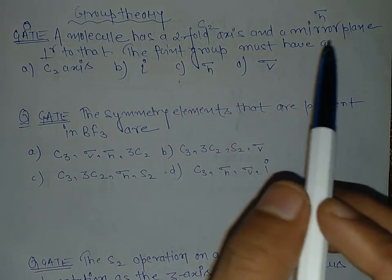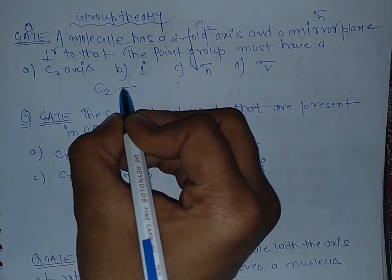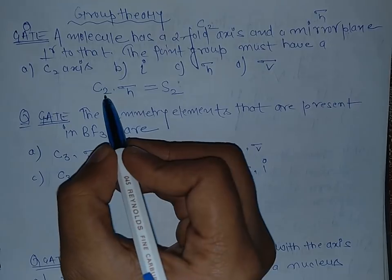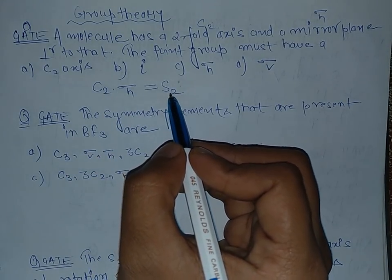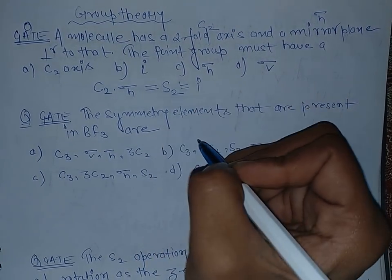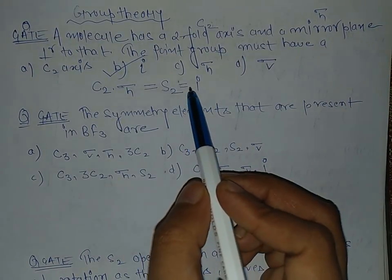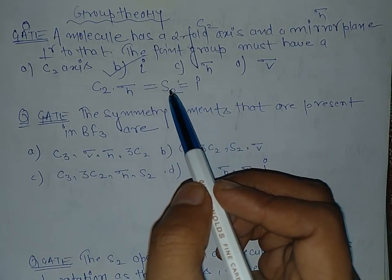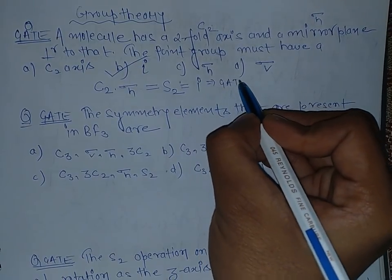But you have to understand that first of all there is a C2 axis and a sigma h plane perpendicular to it. So this is equivalent to S2 axis. There is a C2 axis and a perpendicular plane, that means it is equal to the S2, and we all know that S2 is equivalent to i, center of symmetry. So B is the right answer. I will tell you in just few minutes how S2 is equivalent to i, because this is also a GATE question.